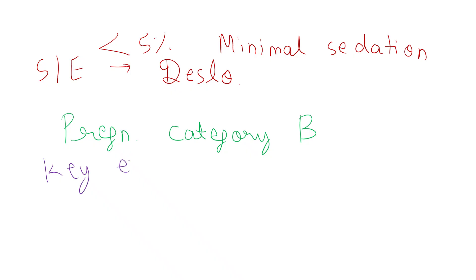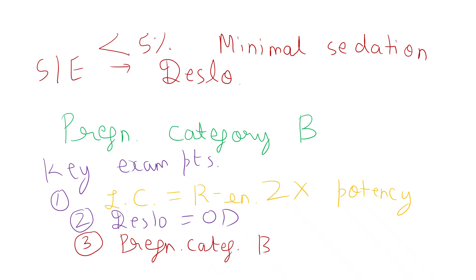Finally, the key exam points to remember. Number one: levocetirazine equals the R-enantiomer with two times potency. Desloratidine equals once daily dosing advantage. Both are pregnancy category B. And last but not least, renal dose adjustment only for levocetirazine. Deslo can be given easily; renal dosage adjustment required only for levocetirazine. These facts appear frequently in NEET PG and USMLE questions.